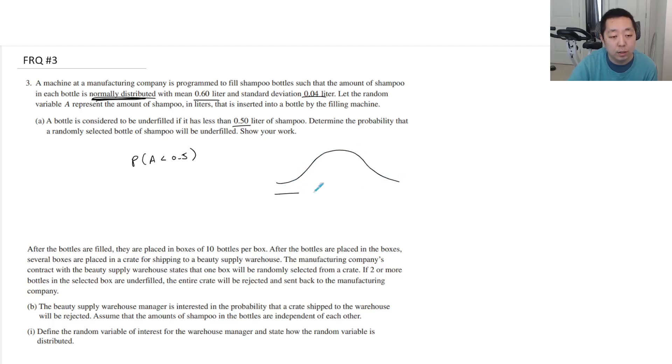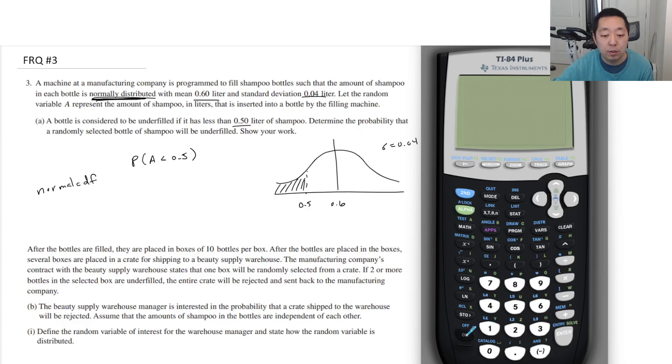For normal distributions I always draw a picture. The mean is 0.6, standard deviation is 0.04, and I want to put 0.5 over here and I want the area to the left. So I'm going to use normal CDF. Let's pull up my normal CDF calculator.